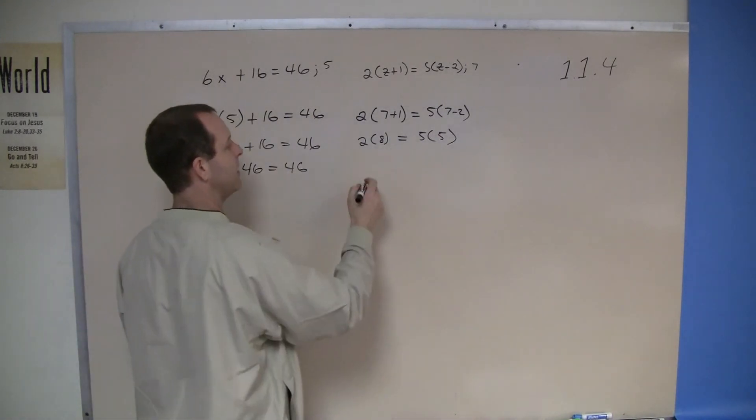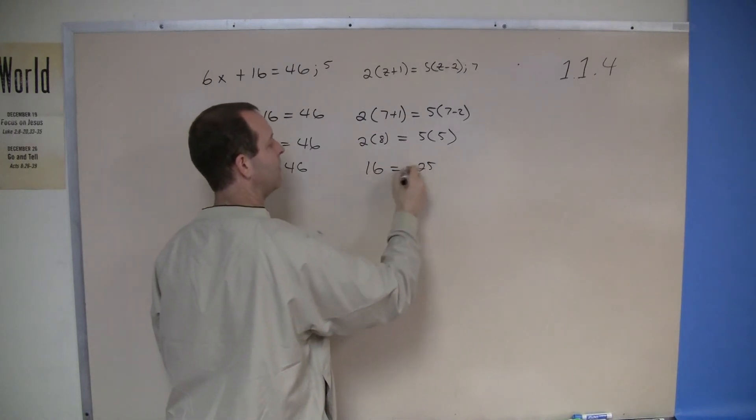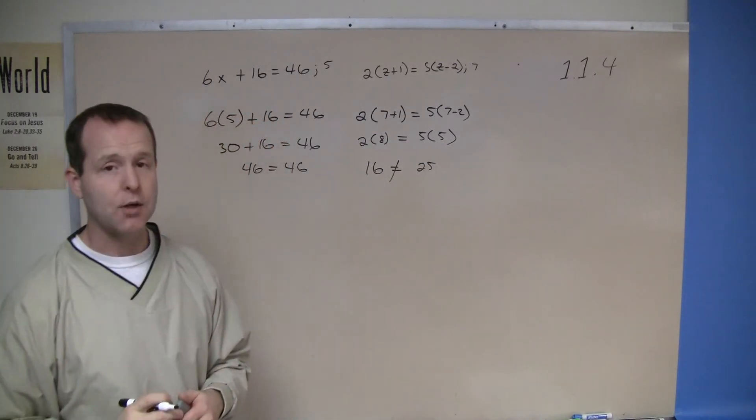2 times 8 is 16. 5 times 5 is 25. 16 does not equal 25.